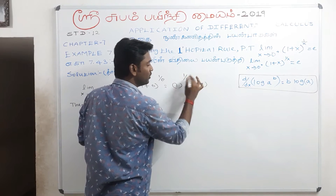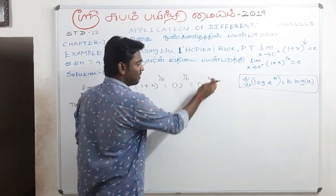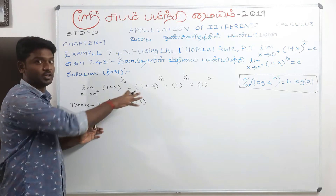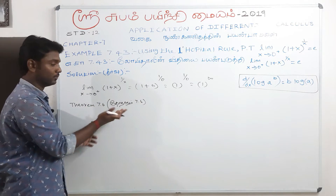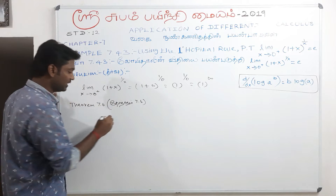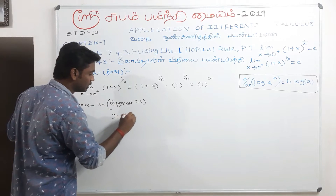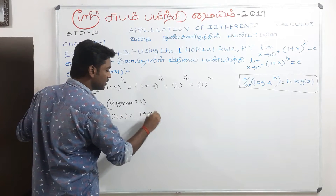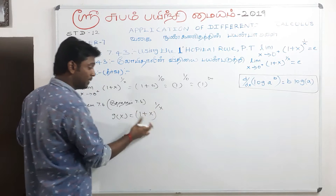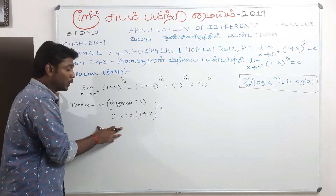Since we get the indeterminate form 1 to the power infinity, we need to apply a logarithm. Let g of x equal (1 plus x) to the power 1 by x. Now let's take the log on both sides.